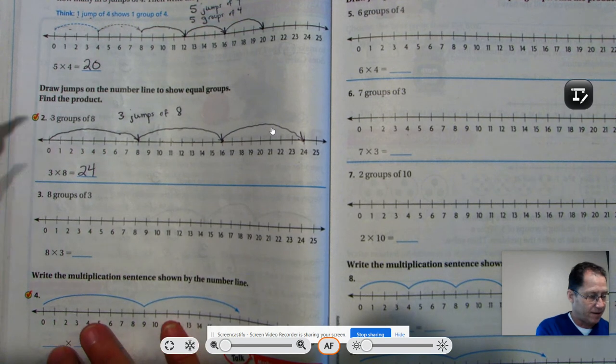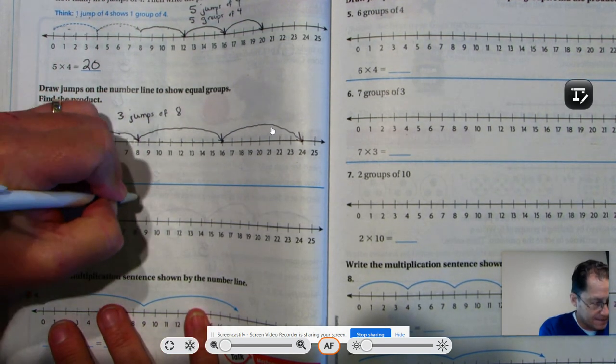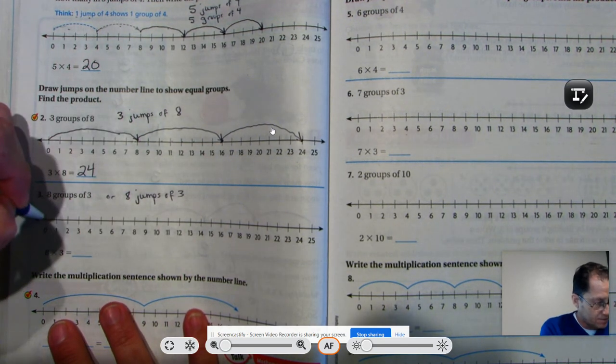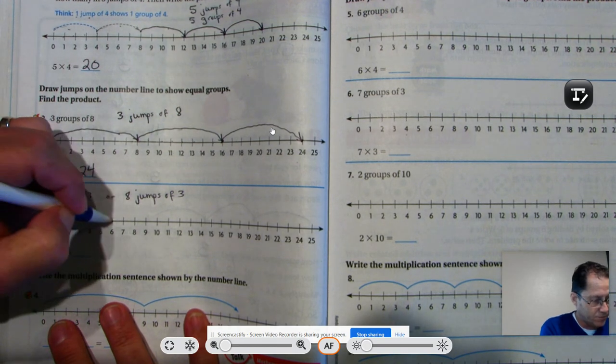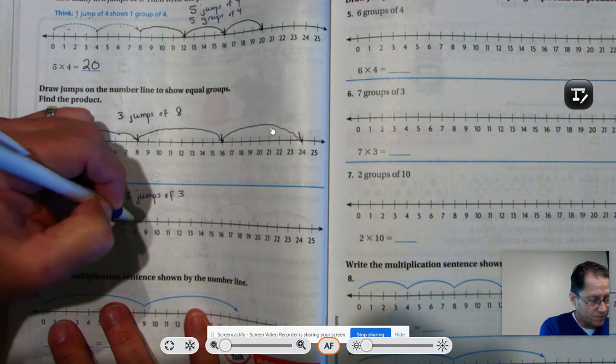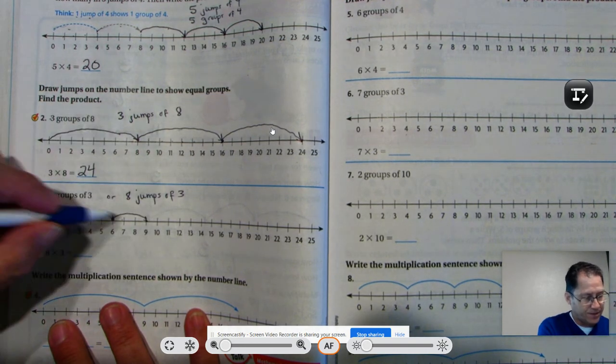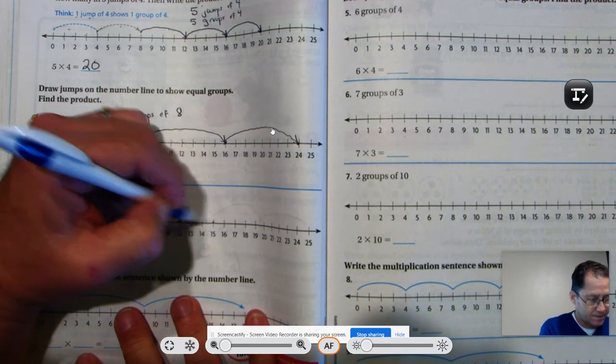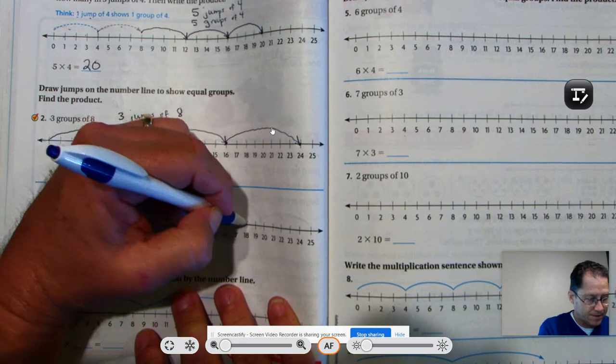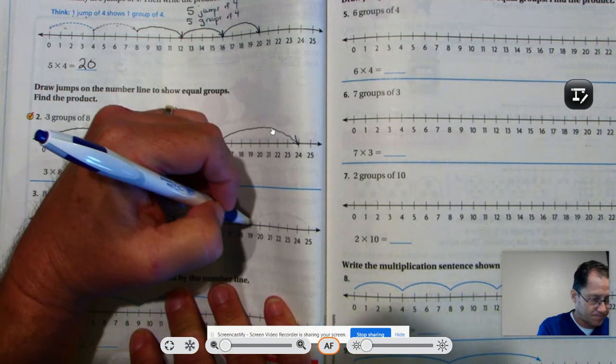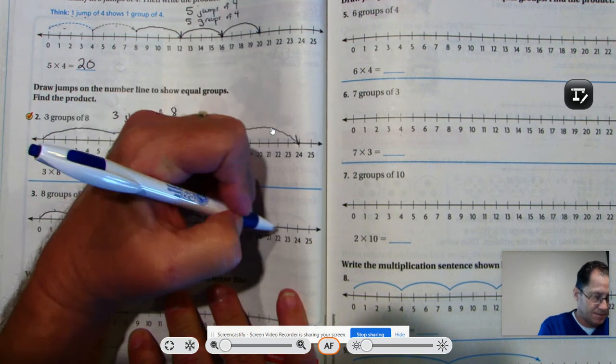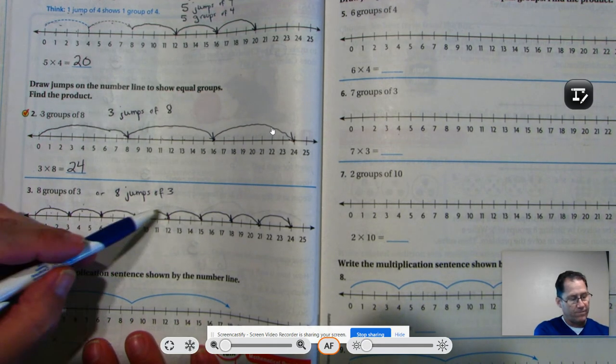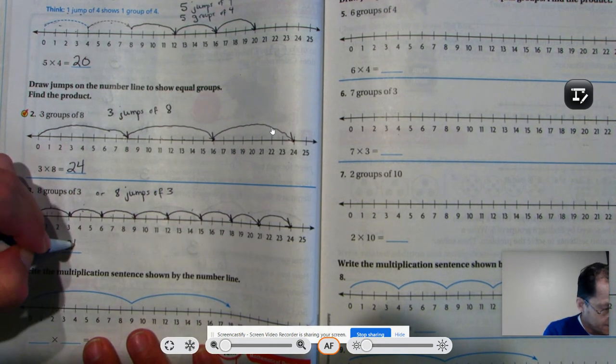Eight groups of three, or eight jumps of three. So we start at zero. There's one: one, two, three. Two: one, two, three. One, two, three. One, two, three. Four jumps. Five jumps. Six jumps. Seven jumps. Eight jumps: one, two, three, four, five, six, seven. Eight times three is 24.